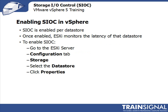Now that we know what SIOC is, how it can help us, and the requirements to use it, it's time to enable SIOC. This is done on each datastore in the virtual infrastructure. Once enabled, the ESXi servers will monitor the latency of that datastore, and once the latency reaches a certain threshold, those servers can begin to throttle the Storage I.O. requests based on the share values given to each virtual machine making those Storage I.O. requests. To enable SIOC, you go to the ESXi server's configuration tab, into storage, select the datastore, click on properties, and you'll find a checkbox there to enable SIOC.